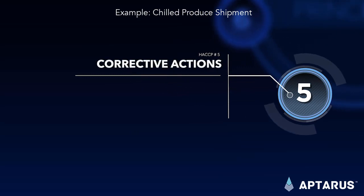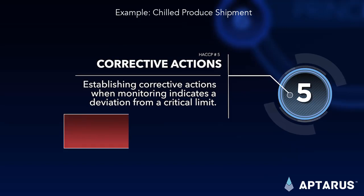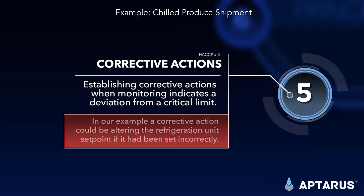Corrective actions – establishing corrective actions when monitoring indicates a deviation from a critical limit. In our example, a corrective action could be altering the refrigeration unit set point if it had been set incorrectly.